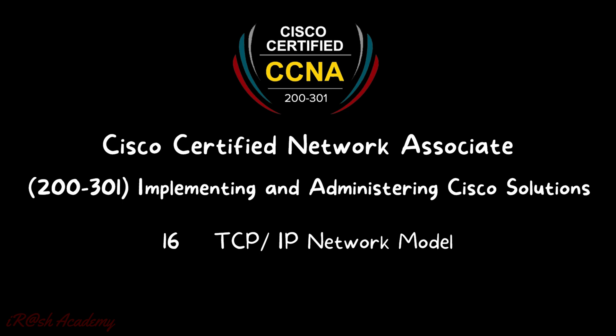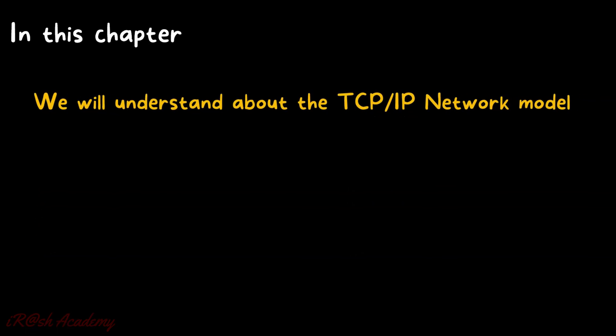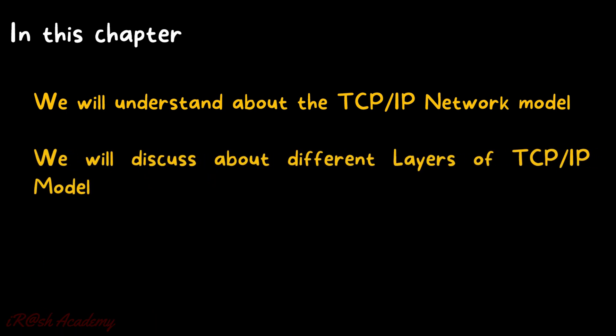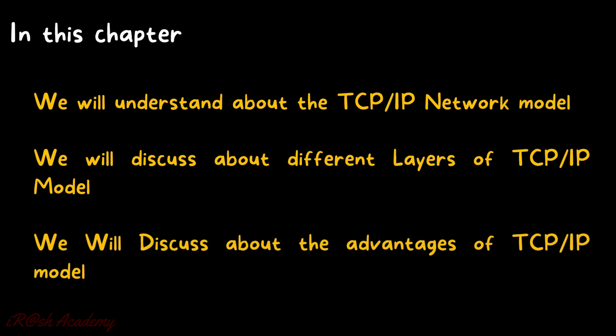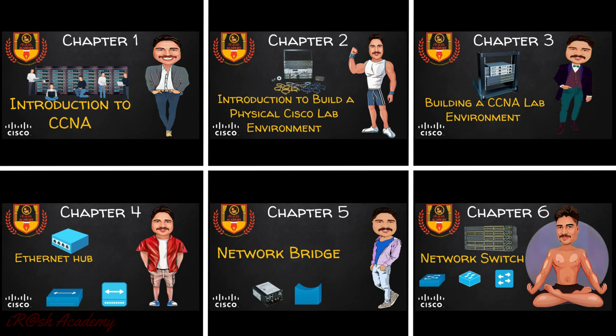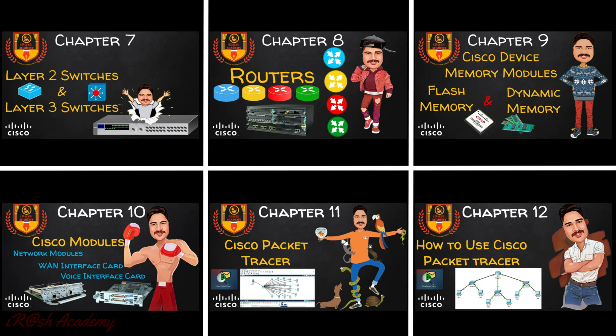Welcome to CCNA 200-301: Implementing and Administering Cisco Solutions. Chapter number 16: TCP/IP Network Model. In this chapter, we will understand the TCP/IP network model, discuss different layers of the TCP/IP model, and discuss the advantages of the TCP/IP model. Welcome to iRush Academy, an unlimited learning platform to enhance your skills. Subscribe to the channel for more videos.